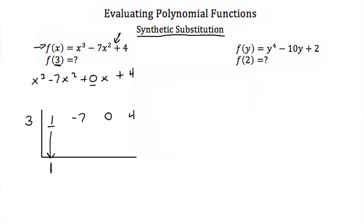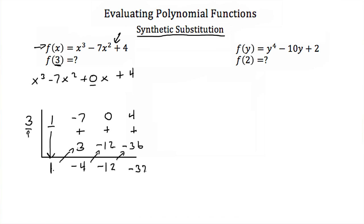Then multiply that 1 by our number on the outside, the 3: 1 × 3 = 3. Write that underneath your next coefficient. Then add: −7 + 3 = −4. Now that −4 is outside the division sign, multiply by 3 again: 3 × (−4) = −12. Add that to the next coefficient: −12 + 0 = −12. Then −12 × 3 = −36. Add: −36 + 4 = −32, which is what we had before.